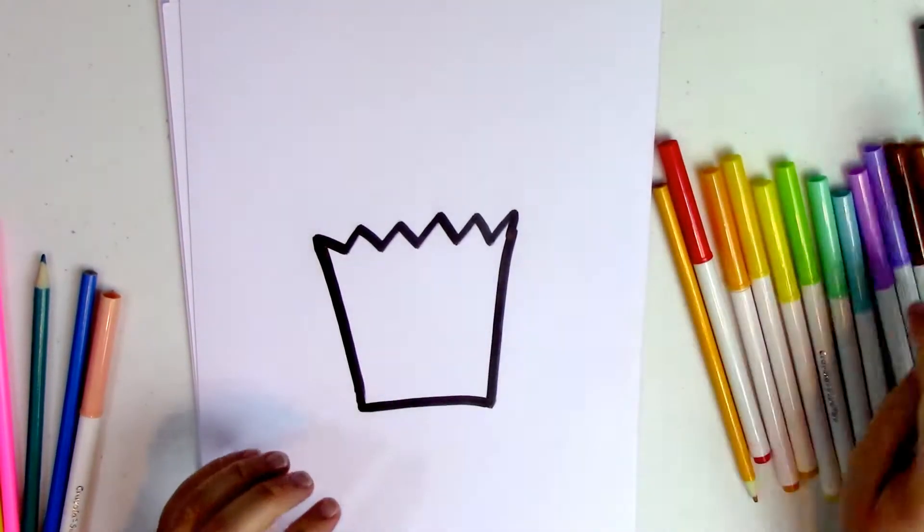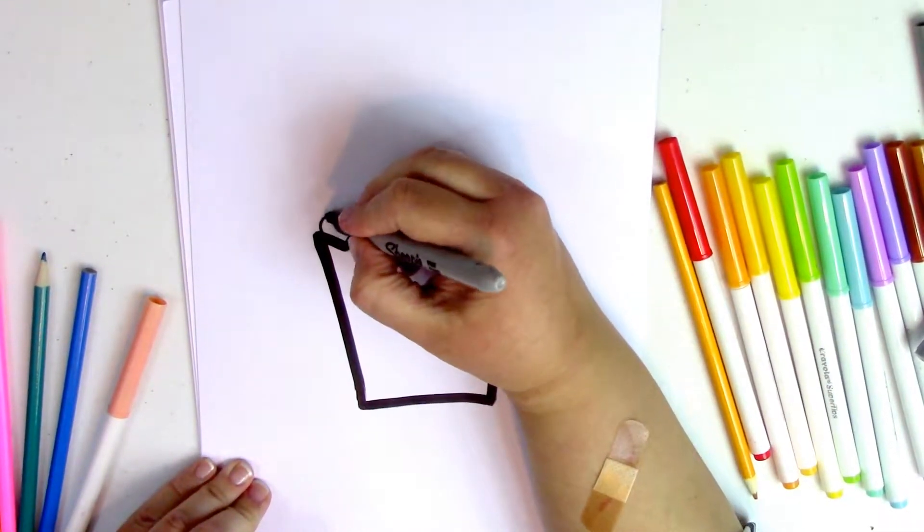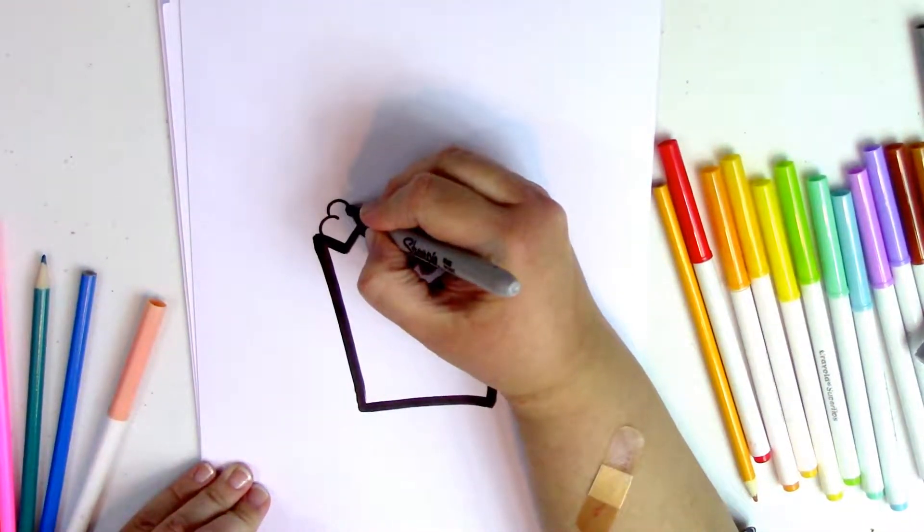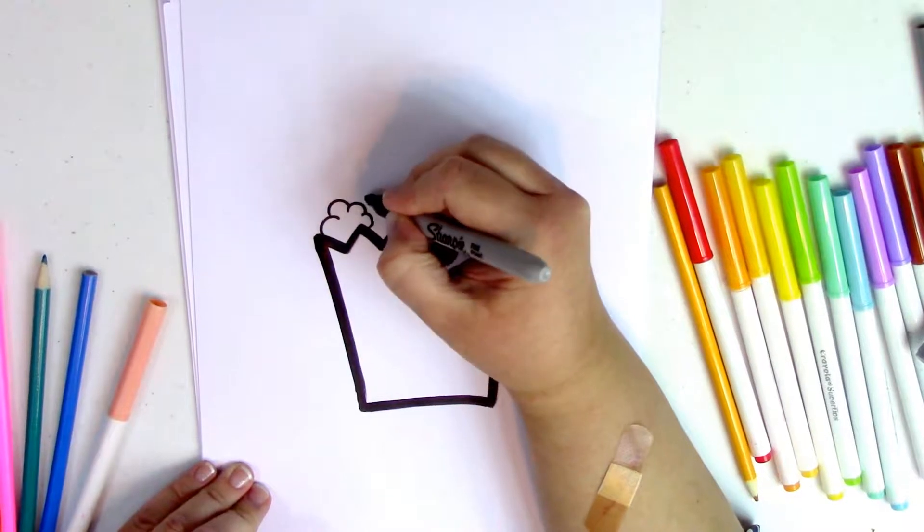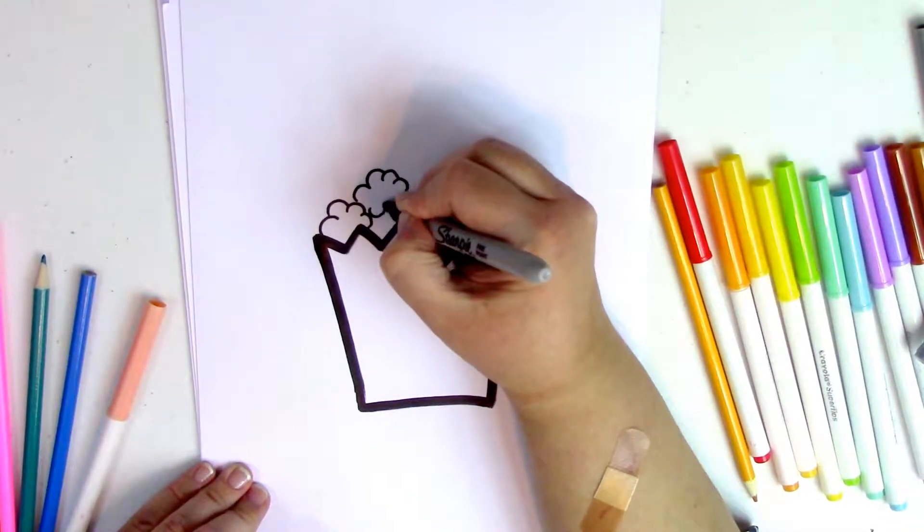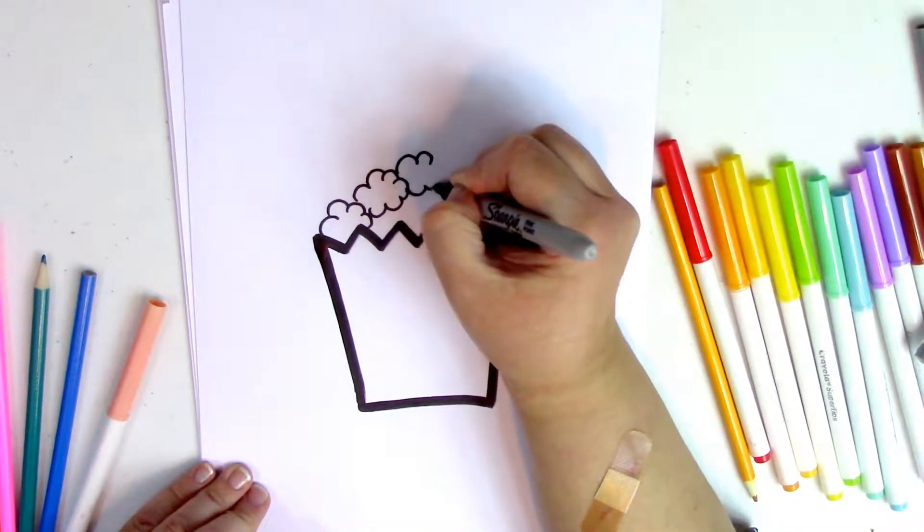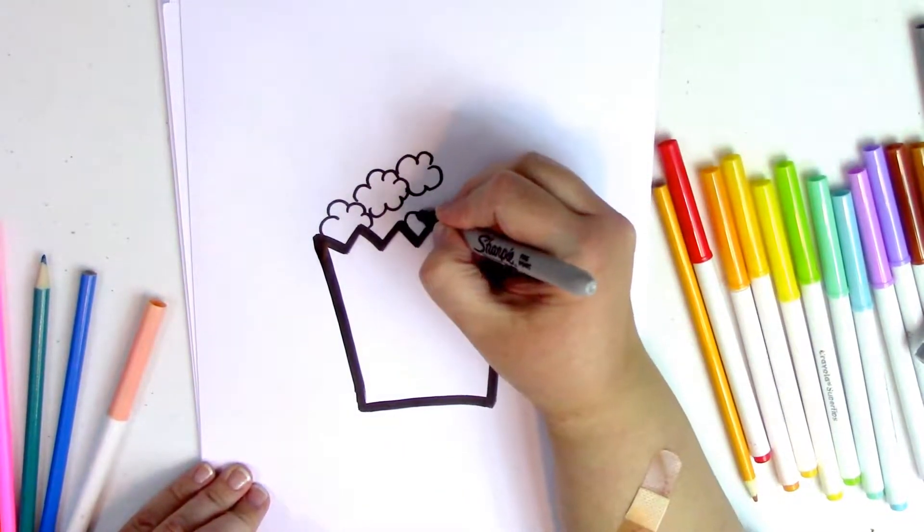I'm going to switch over to a smaller marker for our popcorn. So for the popcorn, all I'm going to do is do kind of like circles but like half circles. So we're going to do a bunch of half circles that are kind of connected. You can see it kind of looks like a cotton ball. That's kind of how popcorn looks, right?